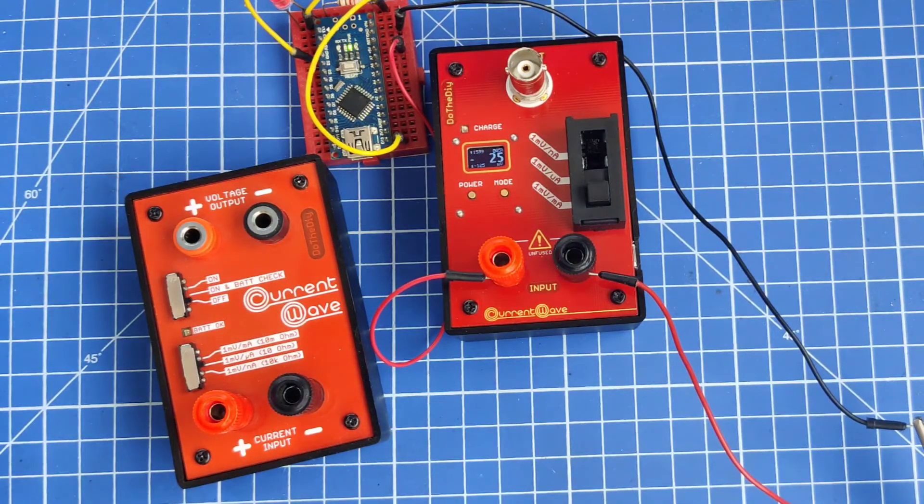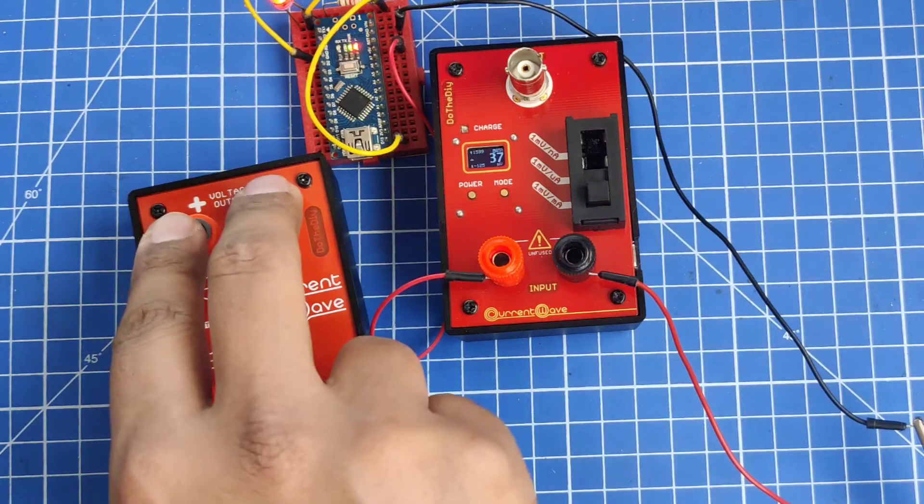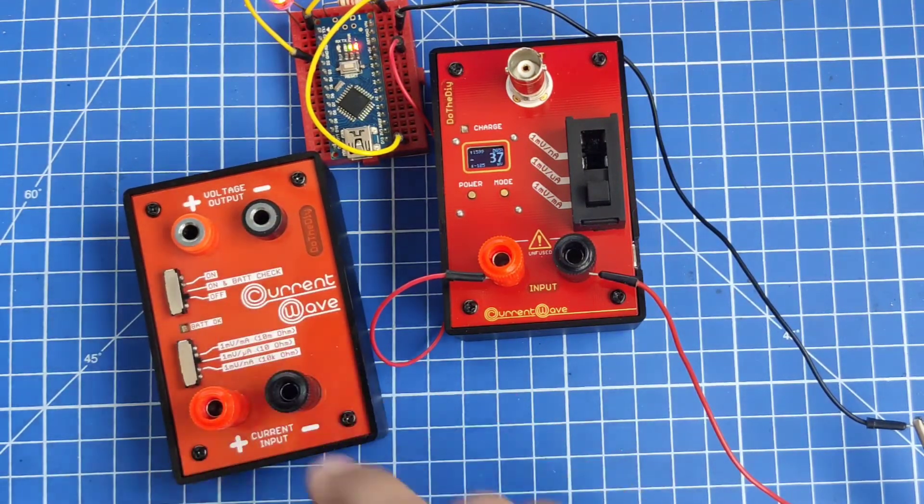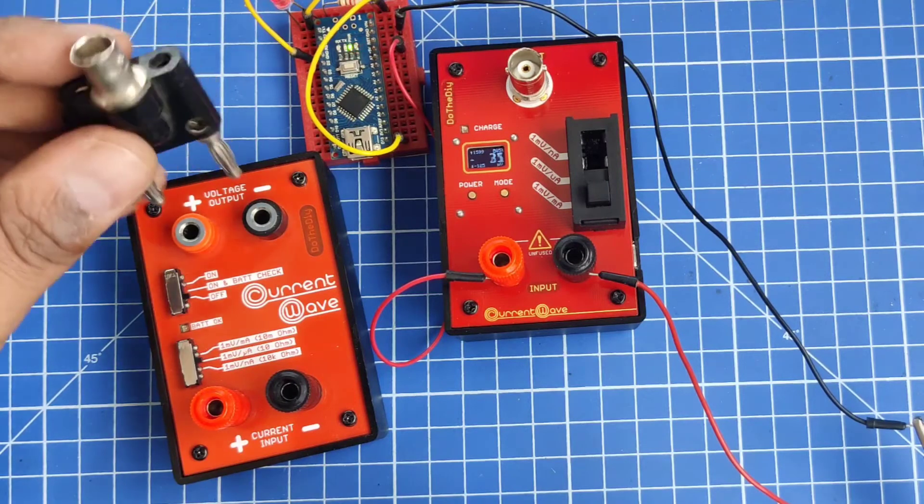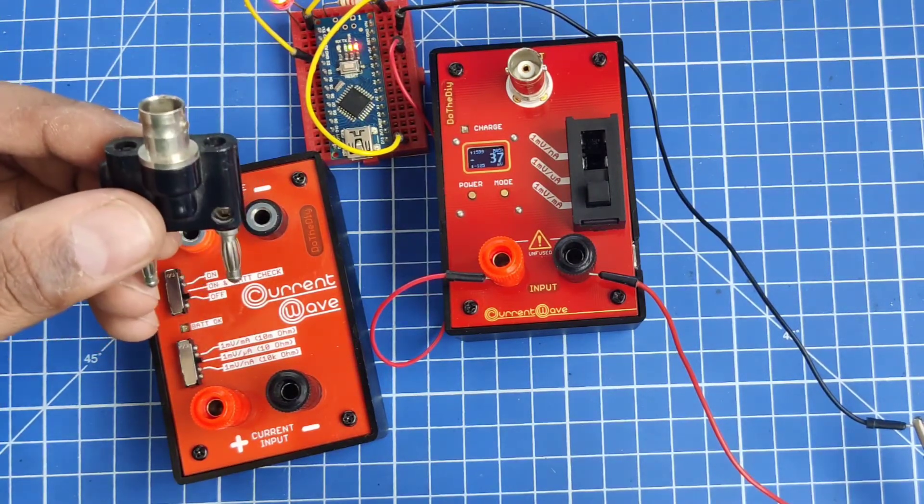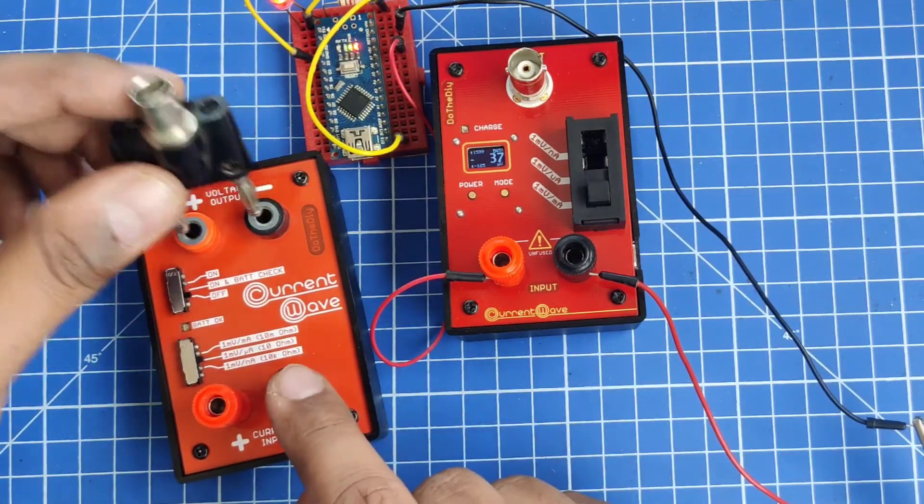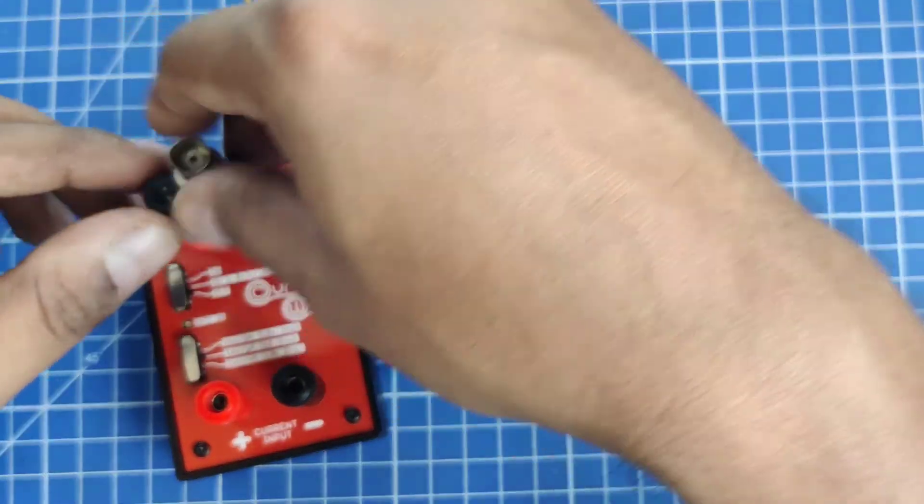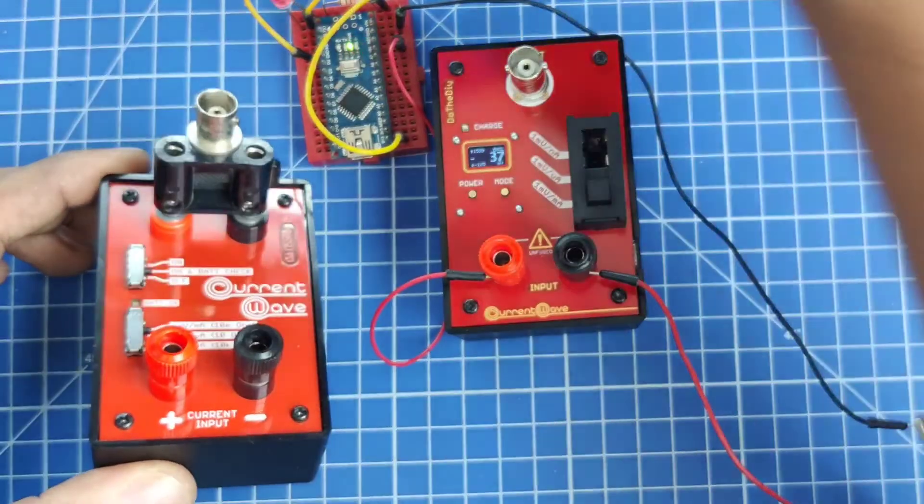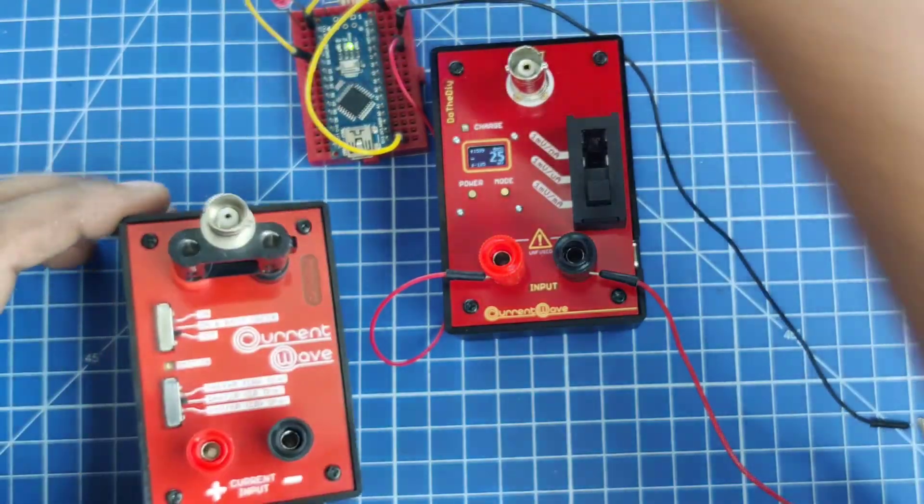Here you can see the output has a banana jack. In this particular configuration, if you want to connect a DSO then you will need an adapter like this, a banana to BNC adapter. After connecting it like this, then you can connect your BNC jack here directly.